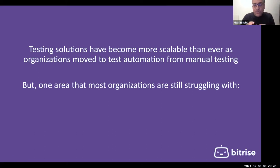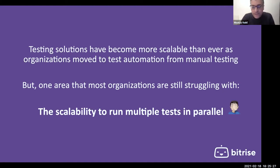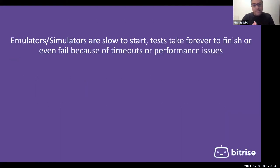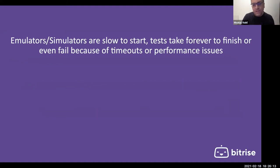One area where most organizations still struggle is the scalability to run multiple tests in parallel. For example, if we have 1,000 test cases, running them on every PR could take two or three hours, which is unacceptable. The second problem is that emulators and simulators are often slow to start, and tests take forever to finish or even fail due to timeout or performance issues. You end up repeating tests because of emulator initialization problems and many other issues.